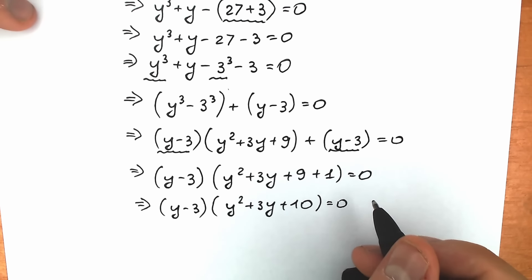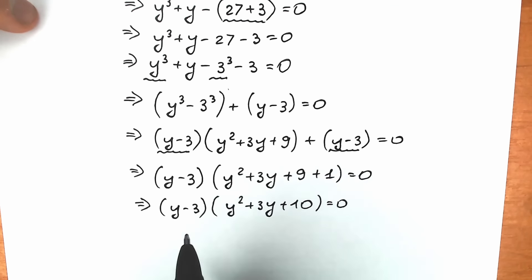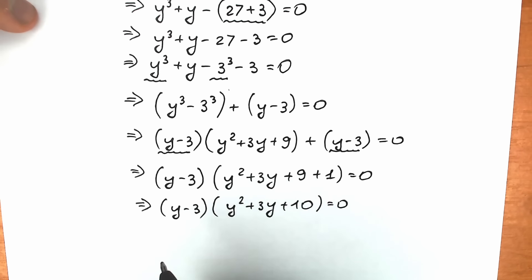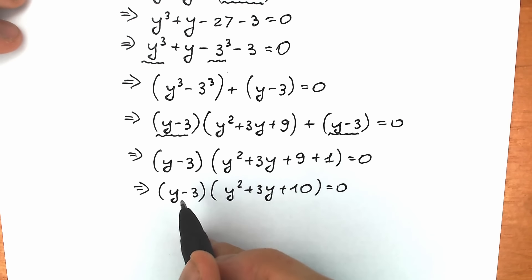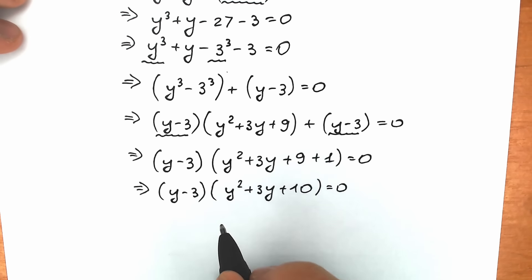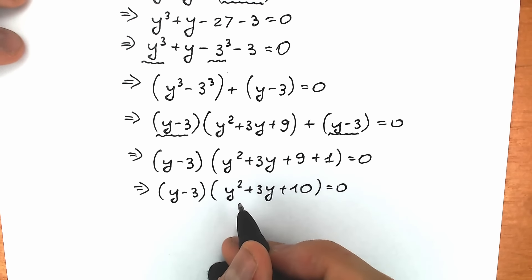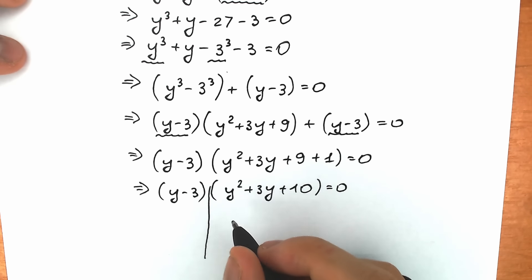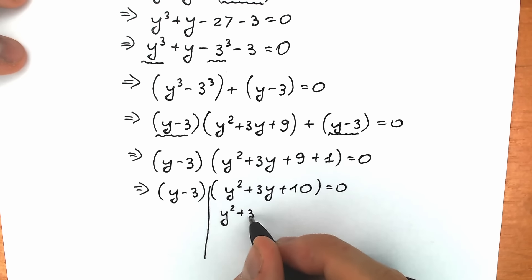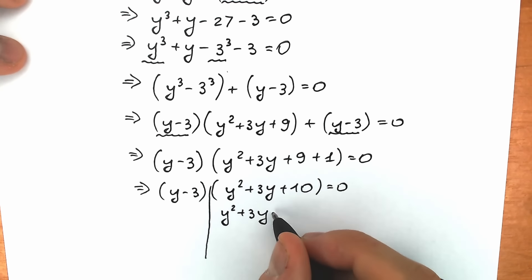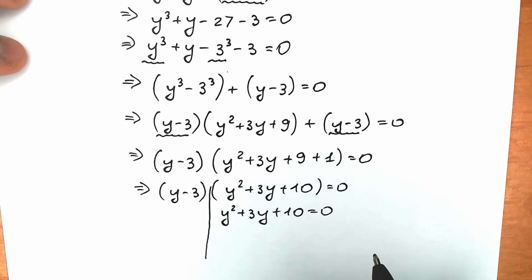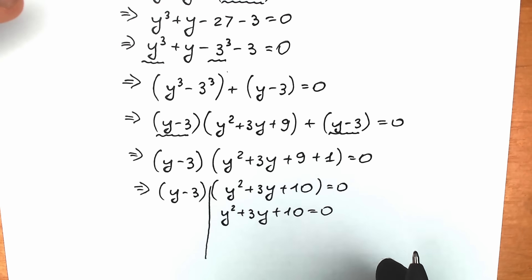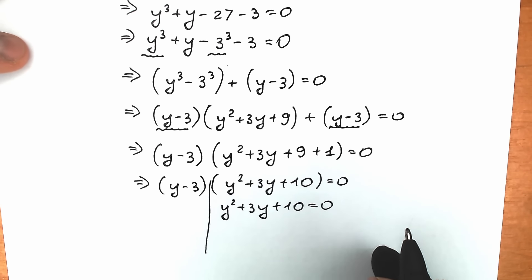Right now we can say we have factored our equation. A product of two parentheses equals zero when the first equals zero or the second equals zero. Let's start with the quadratic: y squared plus 3y plus 10 equal to zero. Let's find the discriminant to see what happens.